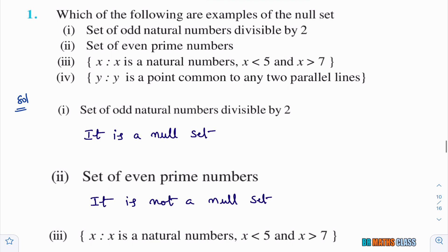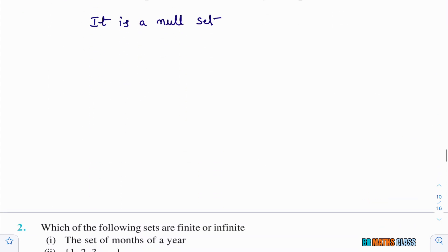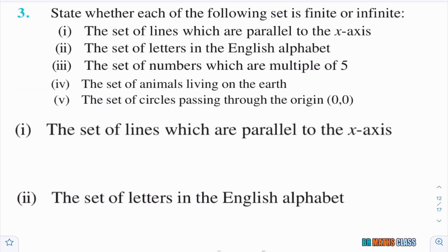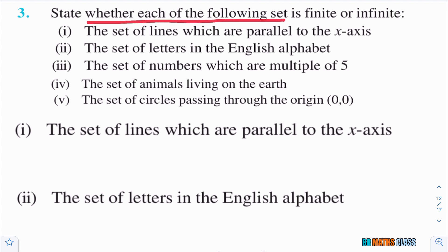In the first question they asked which are null sets — a set which consists of no element is called null set. In the second question they asked which are finite or infinite. A set with finite number of elements is finite; a set with infinite number of elements is infinite. Now see question number 3: state whether each of the following sets is finite or infinite.